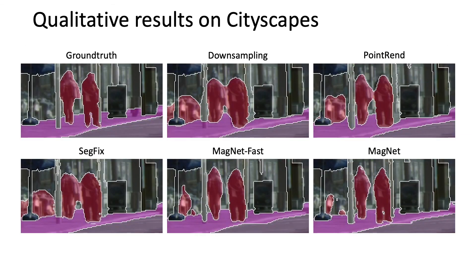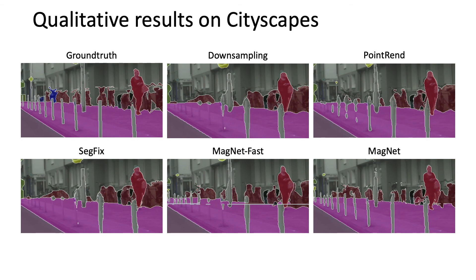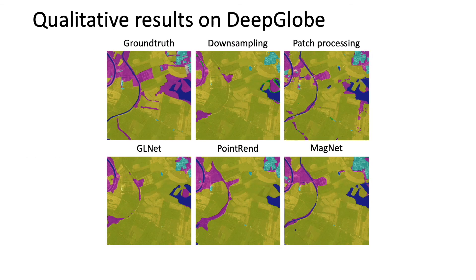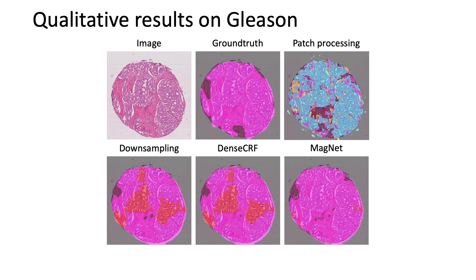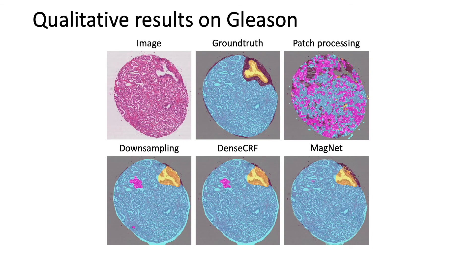These are some other results on the Cityscapes dataset in comparison with SegFix and PointRend methods. On the DeepGlobe dataset, we show here some results. On the Gleason dataset, we show here some segmentation results, where the Magnet works well on these histopathologies.